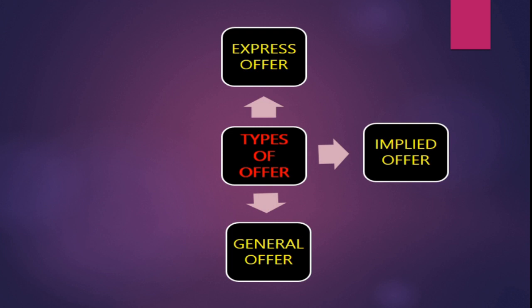The third type is general offer, which means the offer is made to the public at large. For example, Mr. X has lost his dog and places an advertisement in the newspaper saying that if anyone finds and returns the dog, they will be rewarded with rupees five thousand. This is a general offer, and any member of the general public can accept it.